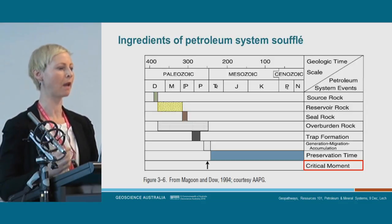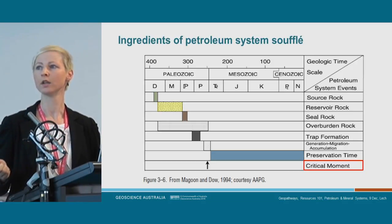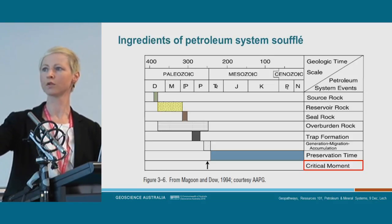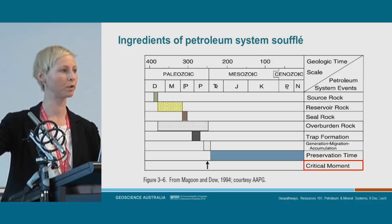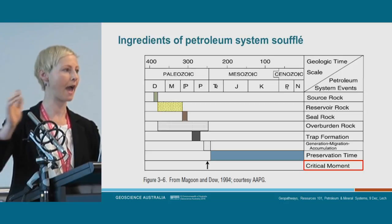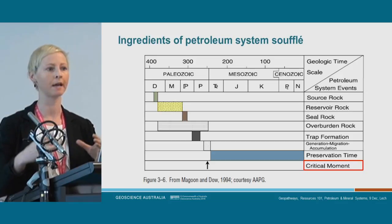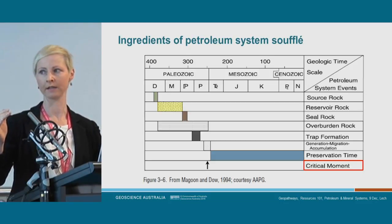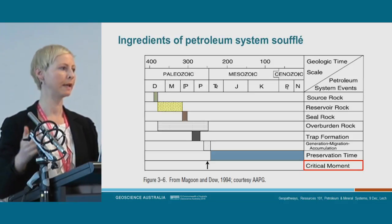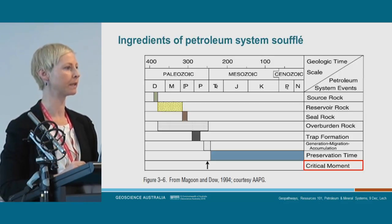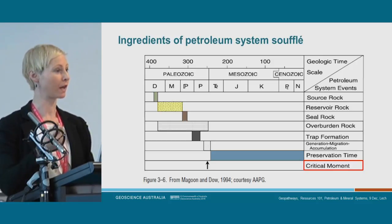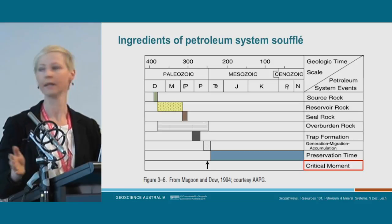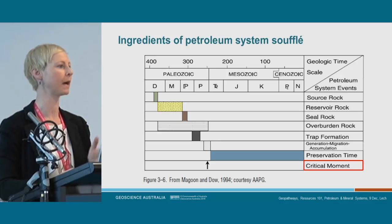Petroleum systems are a bit like a soufflé — they're really tricky to form. You need your source rock, then a reservoir rock to accumulate oil and gas, a seal over all of that, and rock on top to allow burial and compaction to the right depth. Then we need to form a trap. Once all those ingredients are in place, we need generation and migration of oil and gas, and that comes at a critical moment — just like the soufflé, you've got to get it out of the oven at the right time or it'll all go to pieces. It all has to come together at that critical moment, then be preserved over long geological periods of time until we go exploring for it today.